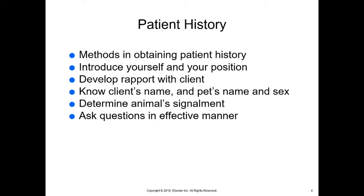First we're going to talk about getting the history. There are a couple of different methods in obtaining patient history. It's going to start by you introducing yourself and your position when you walk into a room. The client is not going to know who you are and what you do. You need to be professional — they need to be able to trust you with their pet. You need to know the client's name, the pet's name, and very importantly whether the pet is a girl or a boy.